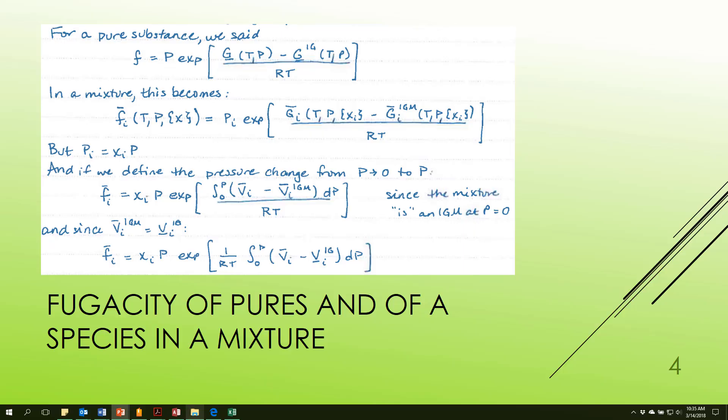We also have earlier defined fugacity of a pure substance in terms of the difference between its molar Gibbs energy minus what that would have been if I had an ideal gas. For a mixture, I'm going to do this, but now instead of the molar Gibbs energy, I'm looking at the partial molar Gibbs energy of the species. And instead of looking at the substance as an ideal gas, I'm looking at it as a species within an ideal gas mixture.